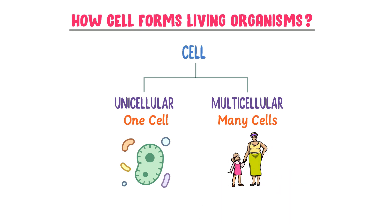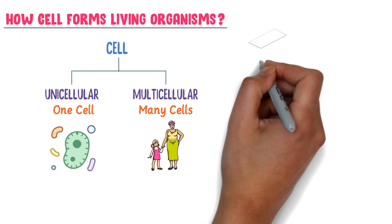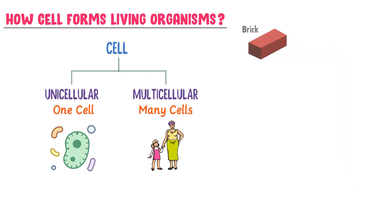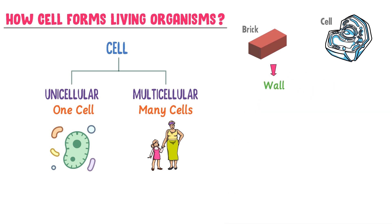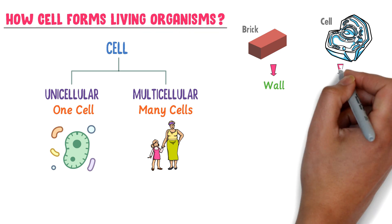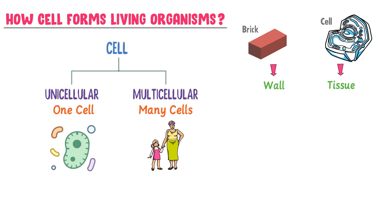There are five levels involved in the formation of any organism. Consider a brick and a cell: when many bricks are joined together, they form a wall. Similarly, when many cells are joined together, they form a tissue like muscular tissue. When many walls are joined together, they form a room. Similarly, when many tissues are joined together, they form an organ like the stomach.